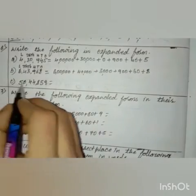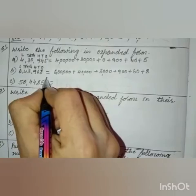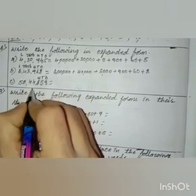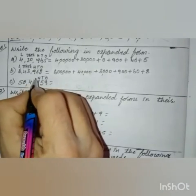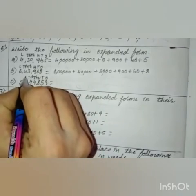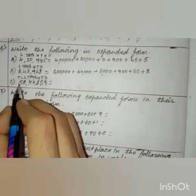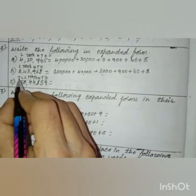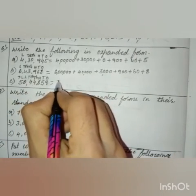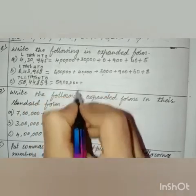Next question number C. Let us write the place values. 9 is in the ones place, 5 is in the tens place, 8 is in the hundreds place, 4 is in the thousands place, this 4 is in the ten-thousands place, 0 is in the lakhs place, 5 is in the ten-lakhs place. Now let us write the expanded form. 5 into 10 lakh is 50 lakh.